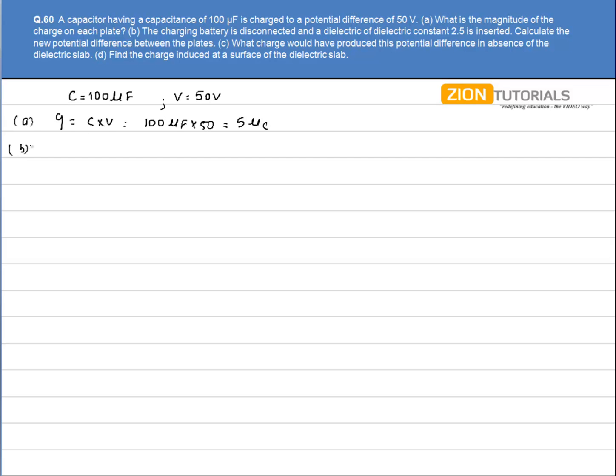Now the charging battery is disconnected and a dielectric of constant K equals 2.5 is inserted. Calculate the new potential difference between the plates.